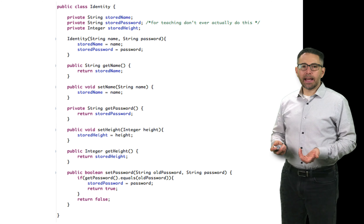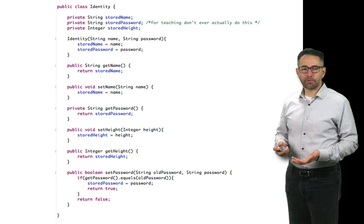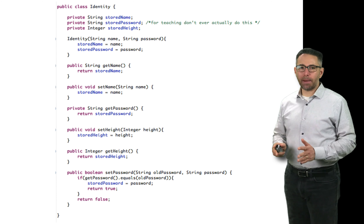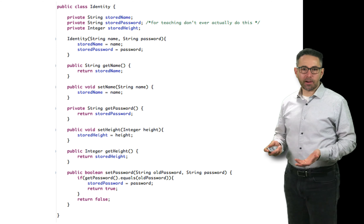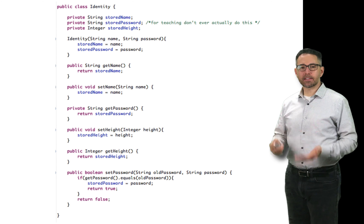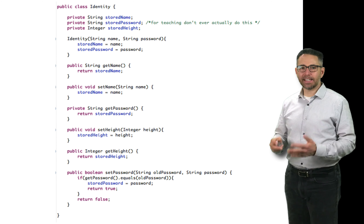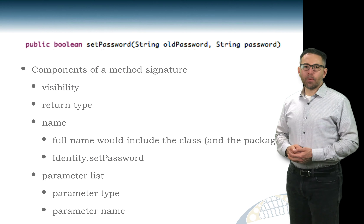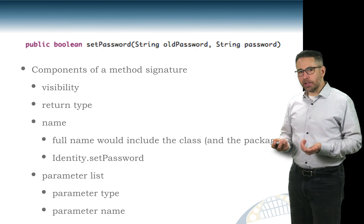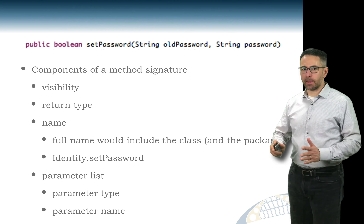Here's a hypothetical Identity class that contains a stored name String, a password, and a height. In real practice, please don't store a password like this — there are much better practices — but this is just a teaching example. The class has a constructor, getters for name and password, and a setter. It encapsulates three instance variables: two Strings and one integer.